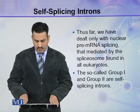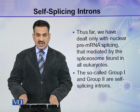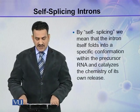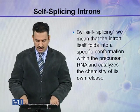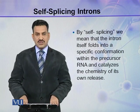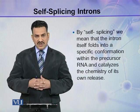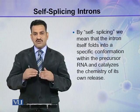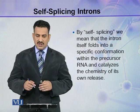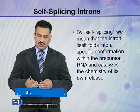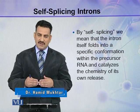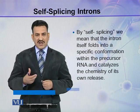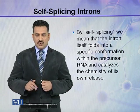The so-called group 1 and group 2 are self-splicing introns. By self-splicing, we mean that the intron itself folds into a specific conformation within the precursor RNA and catalyzes the chemistry of its own release. The RNA introns release themselves from the mRNA — no external spliceosome or external proteins are required.